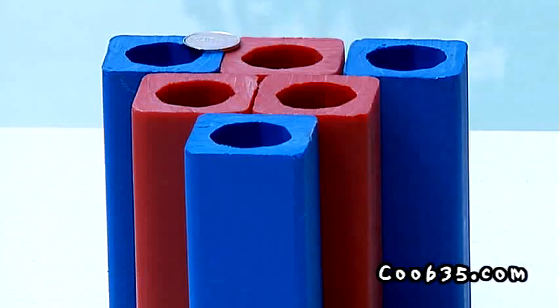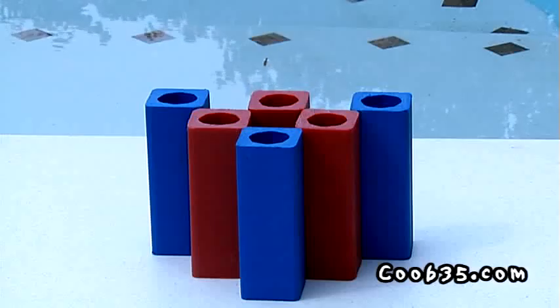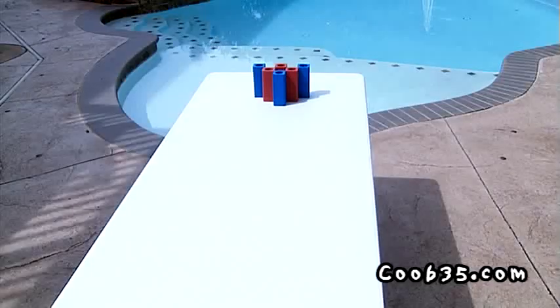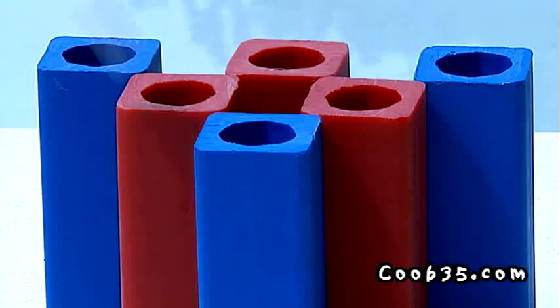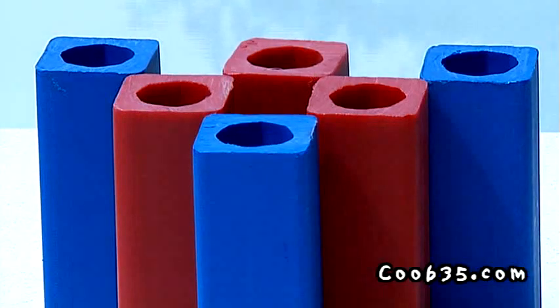On one end of the table, stand and arrange six cubes into either a tight or spread out triangle rack. From the other end, two players take turns pitching pennies, bottle caps, can tabs, etc. into their designated cube color.